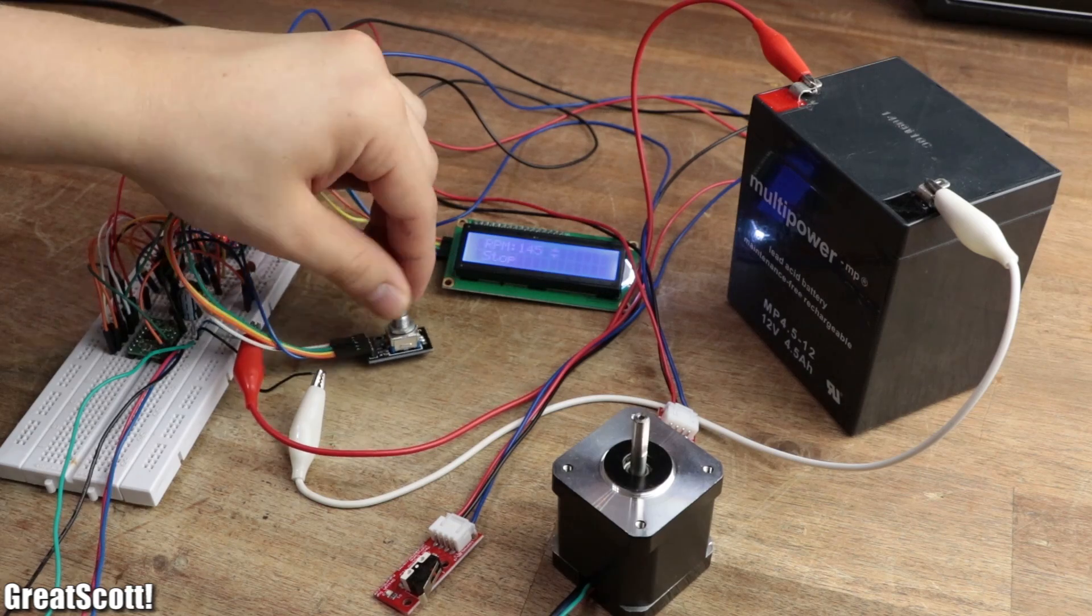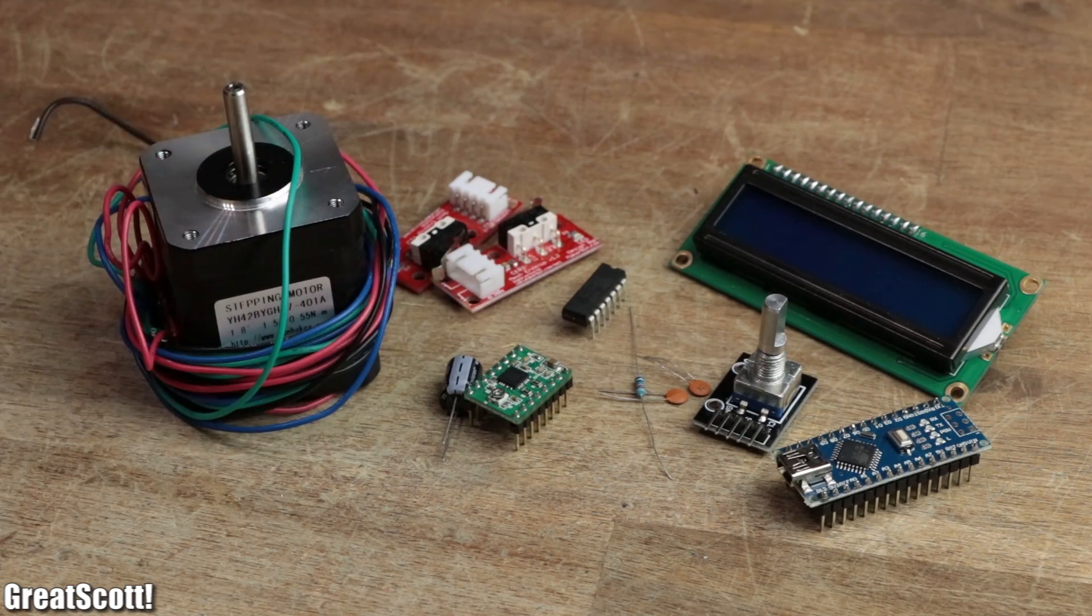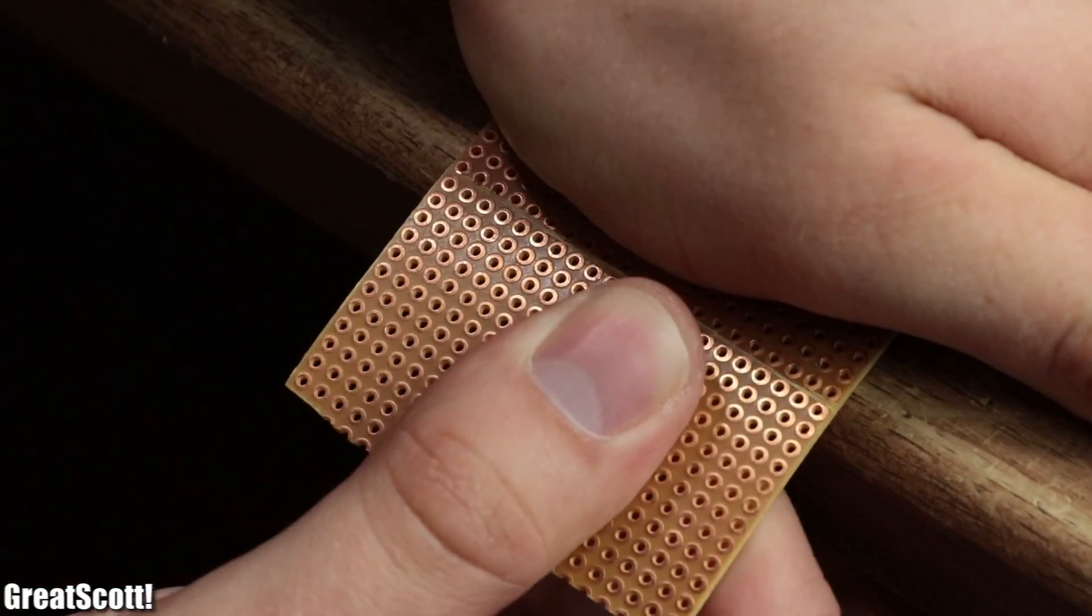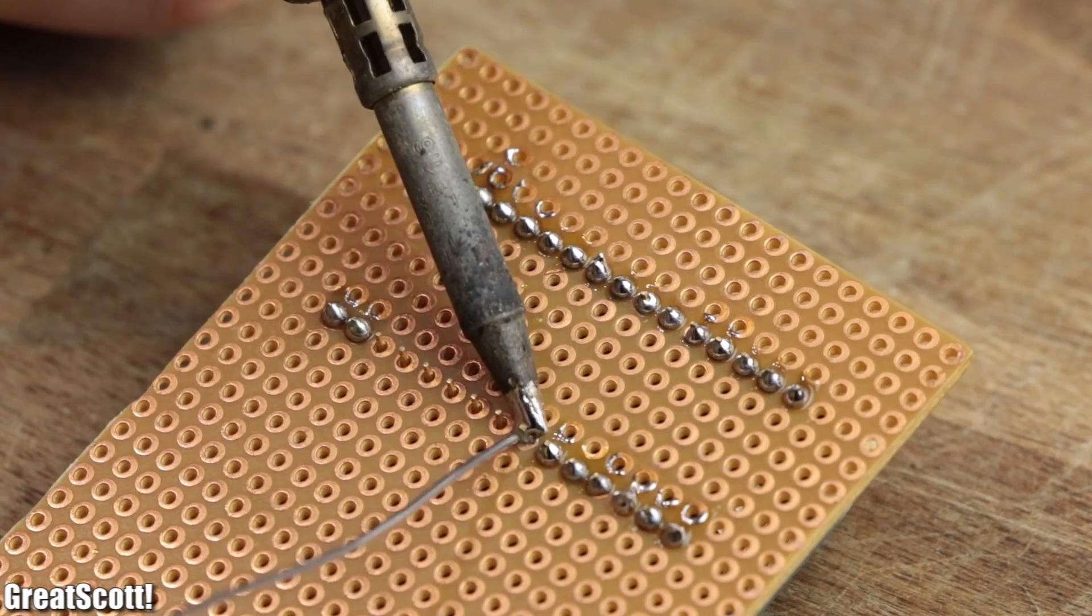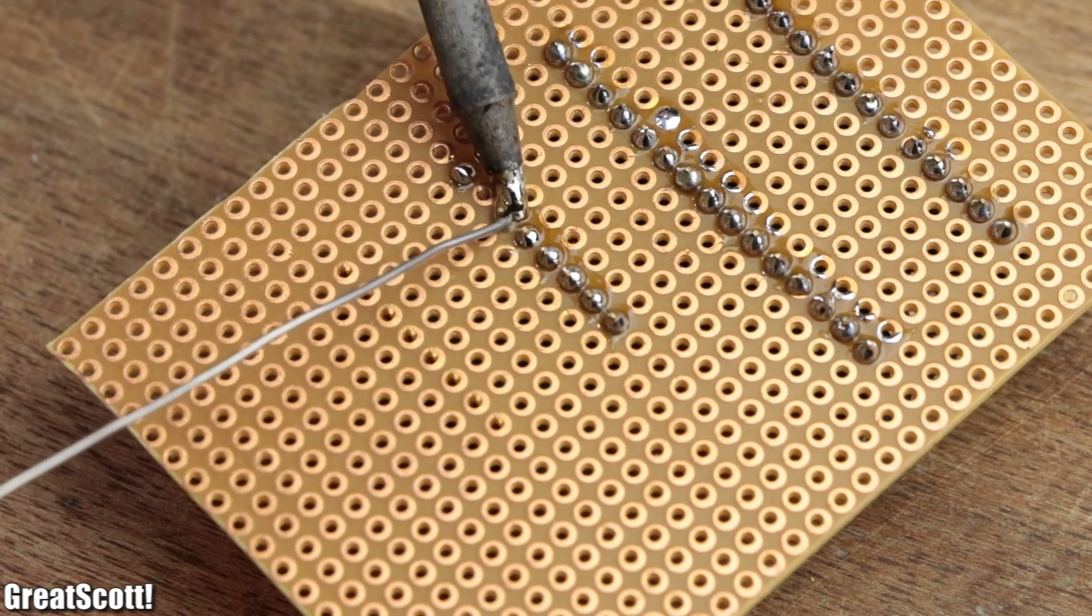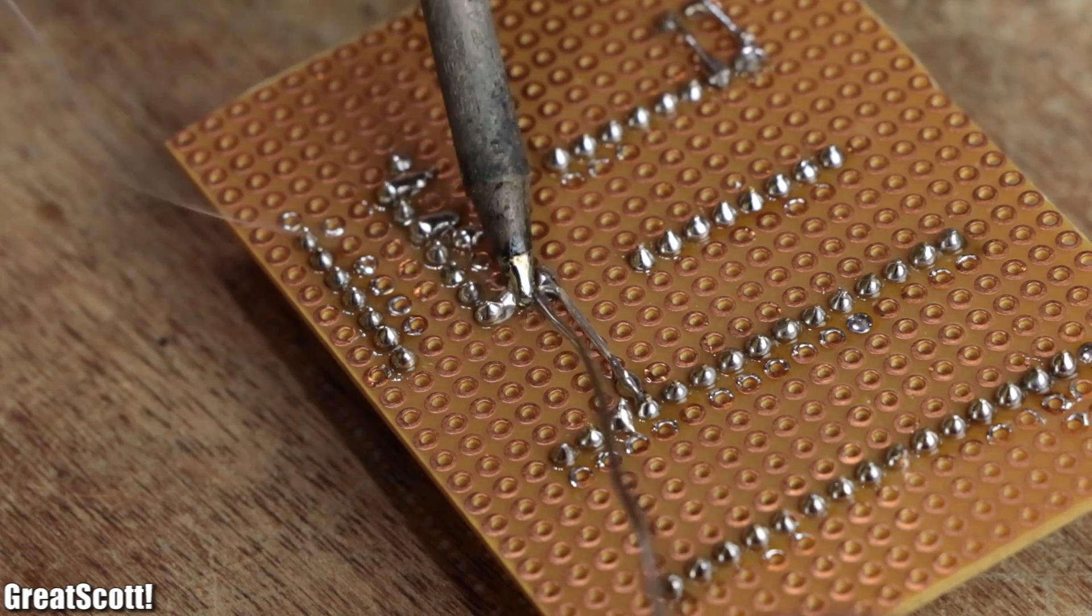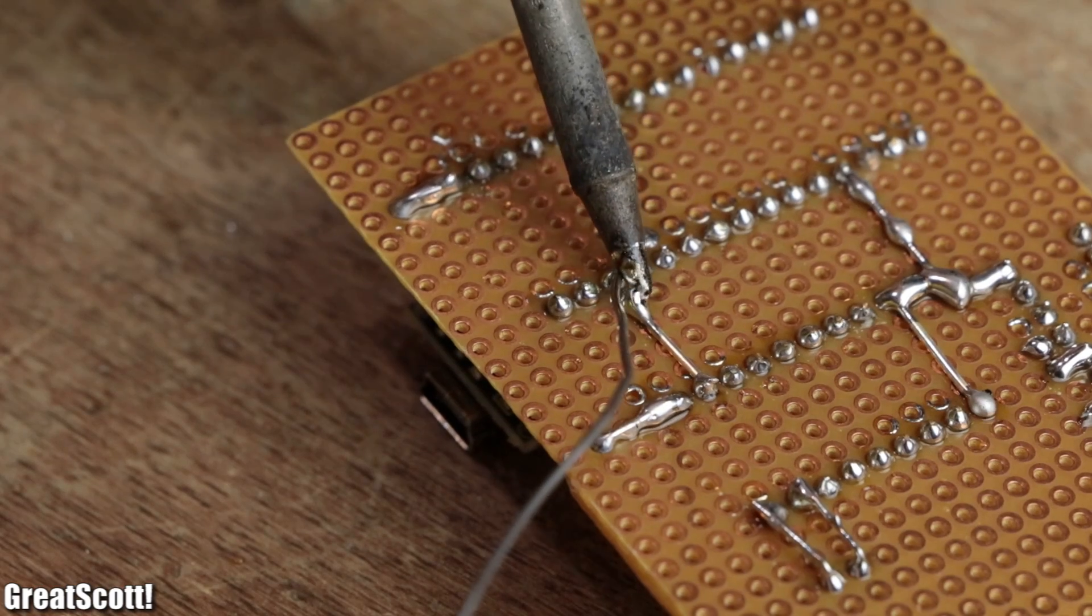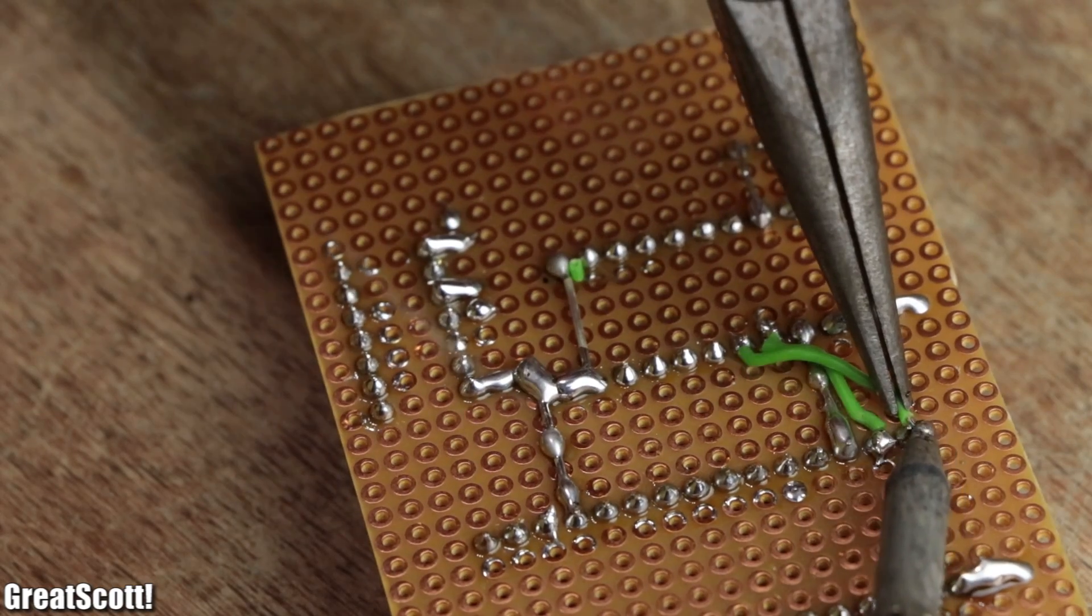Once I was happy with the results of the software part, I gathered all the required components, created a copper dot perf board with dimensions of seven by five centimeters, and started the soldering with the Arduino Nano. In a time span of one hour, I added the remaining IC sockets and connected all the pins among each other according to the previously created schematic with silver copper wire and flexible wire.